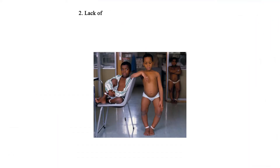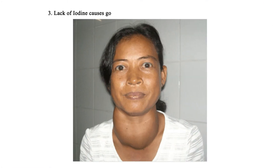2. Lack of calcium causes rickets and muscle cramps. 3. Lack of iodine causes goiter — swelling of the thyroid glands in the neck region.